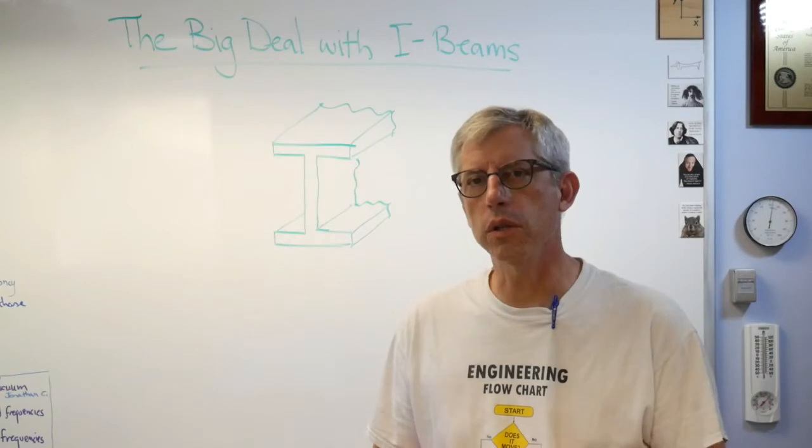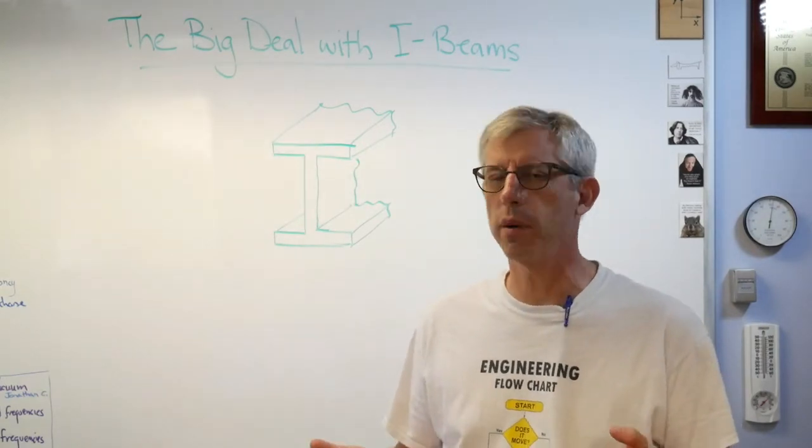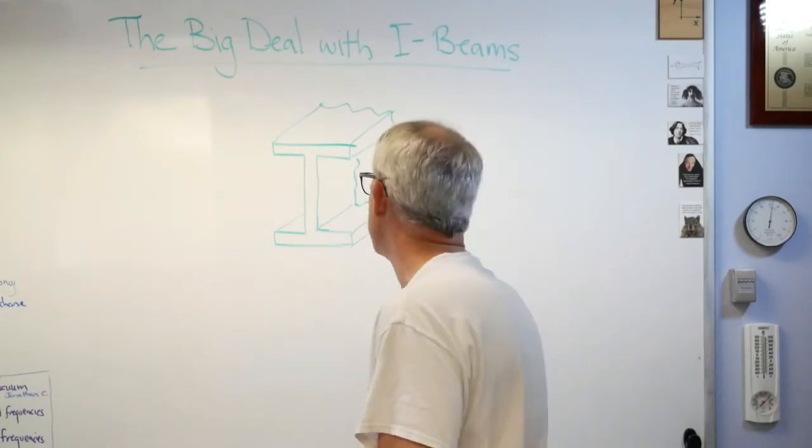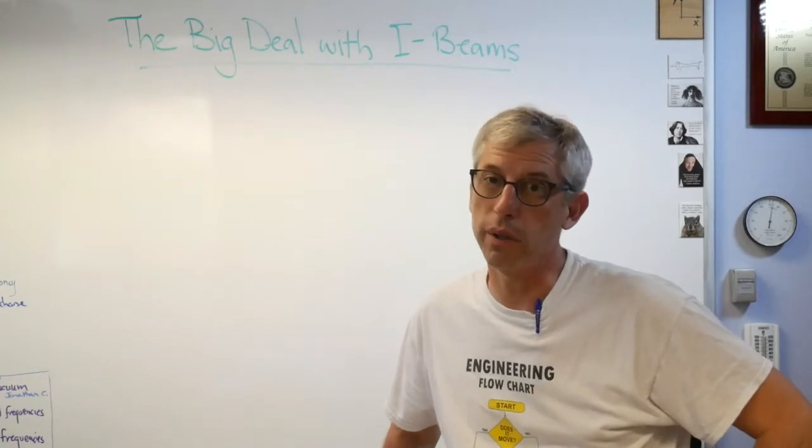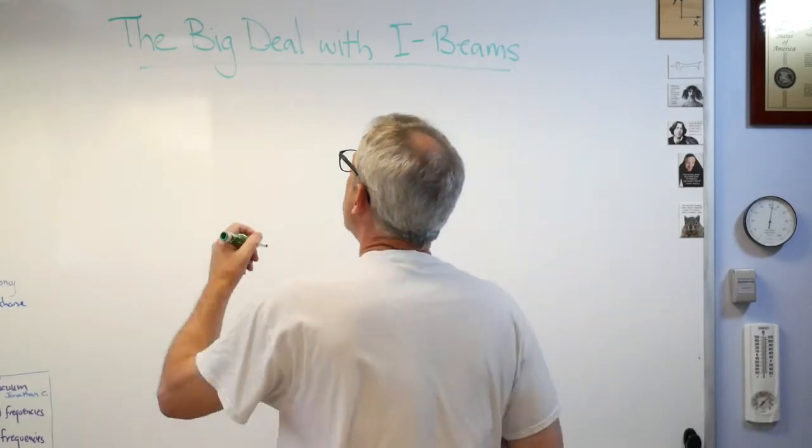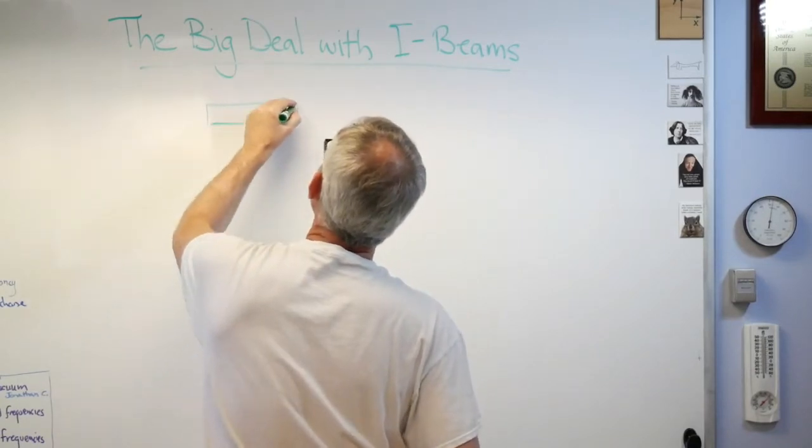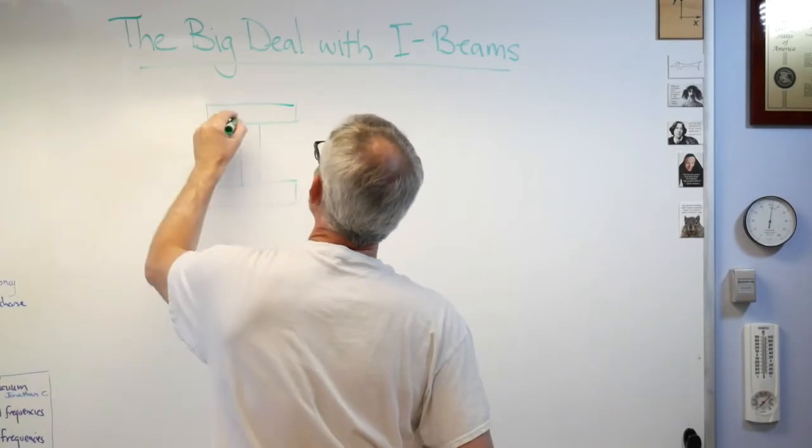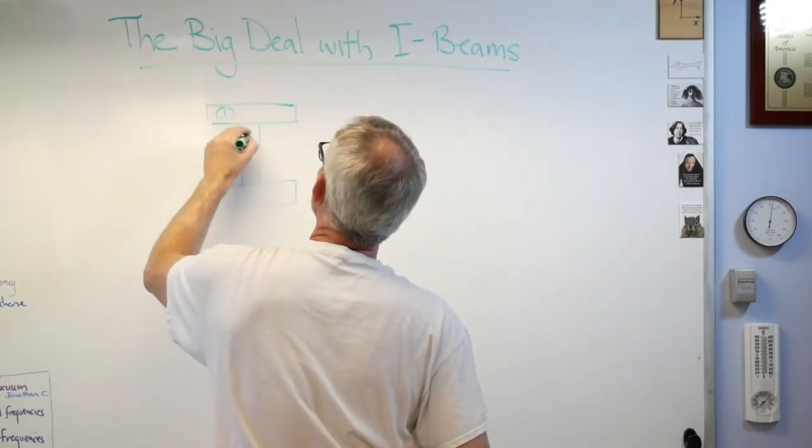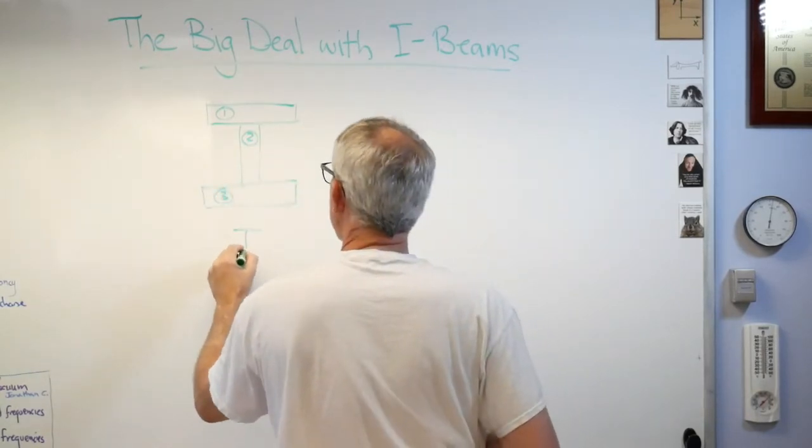If everybody uses them, there must be something about it. It's either that or everybody's stupid. Well, probably not, as it may seem sometimes. Here's the deal: there's an equation that you're going to see in strength of materials if you haven't already. Let's take a structure. We'll call that element one, element two, and element three.